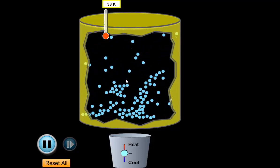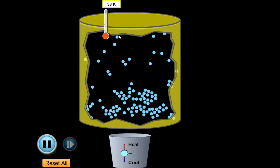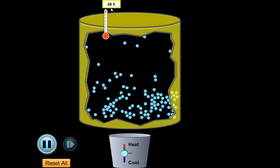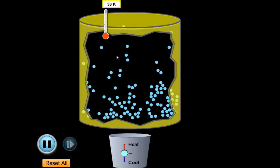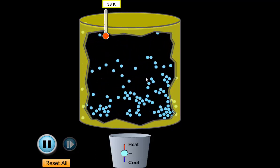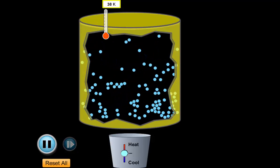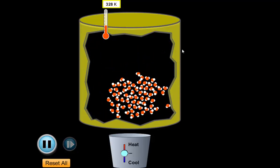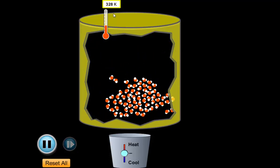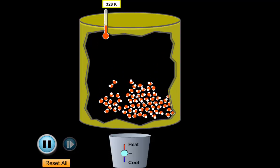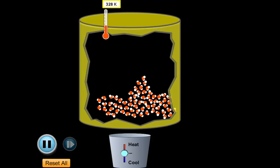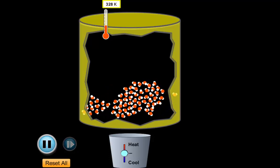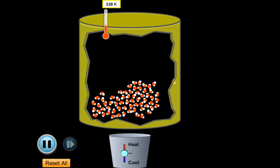This is a neon gas model, so it doesn't take very much energy for these particles to break away from each other. You can see at 38 Kelvin they have enough energy to break away. If I were to change this to a different substance, say water, at 328 Kelvin it's still a liquid — 300 degrees hotter — and that's because the forces of attraction between water particles are very, very strong.